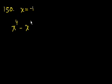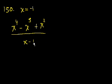Problem 150. If x is equal to minus 1, then x to the 4th minus x to the 3rd plus x squared. All of that over x minus 1 is equal to what? So x to the 4th is 1. x to the 3rd is minus 1, right?